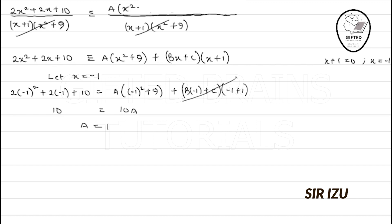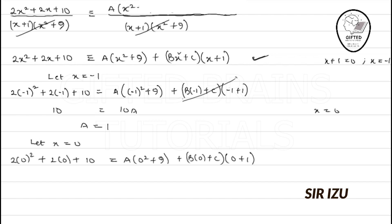Let x = 0. On the left, we get 10. On the right, 9A + C, since B times 0 vanishes. With A = 1, we have 9(1) + C = 10, so C = 1.